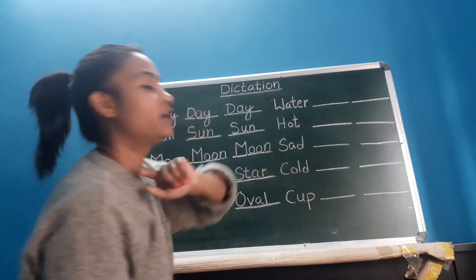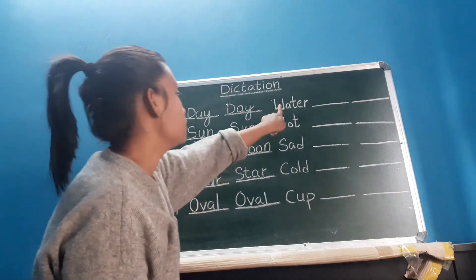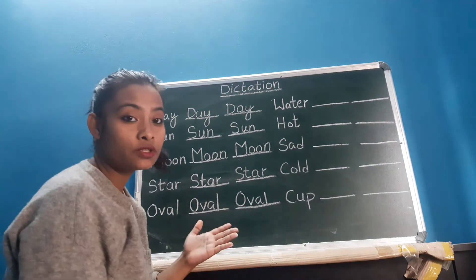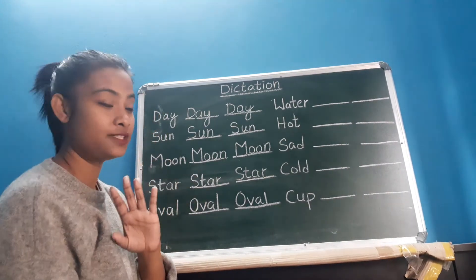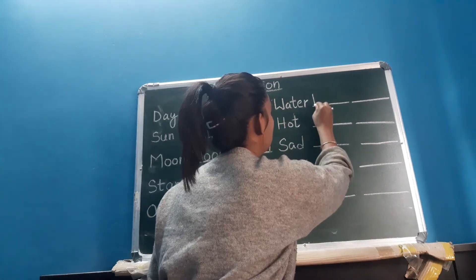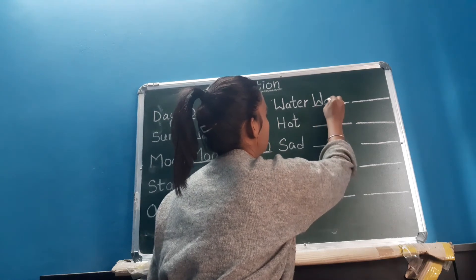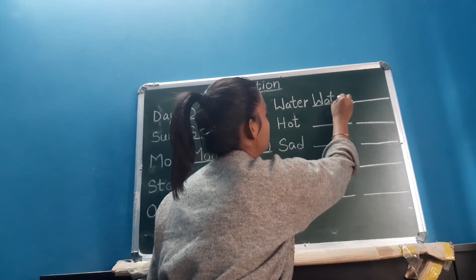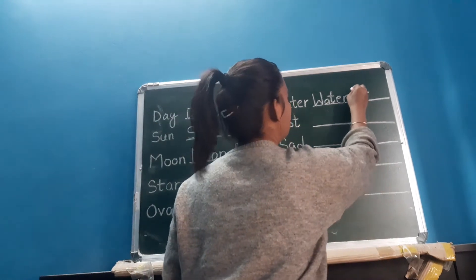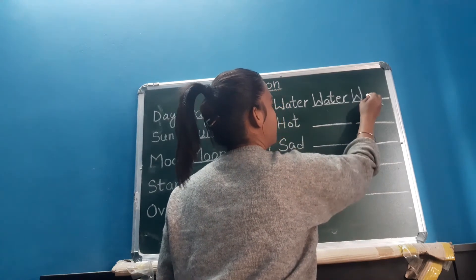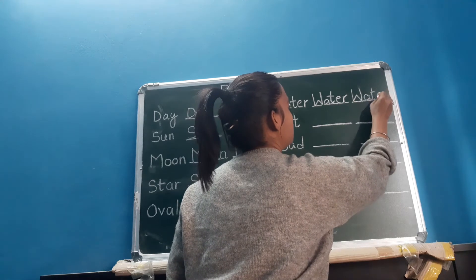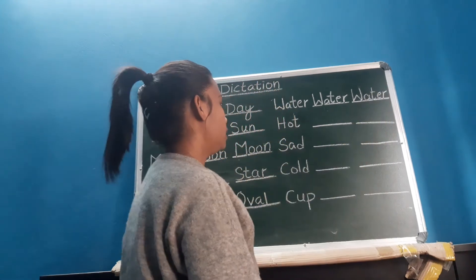Next: W, A, T, E, R — water. Again, W, A, T, E, R — water. So what is water? Whenever you feel thirsty, you drink water, isn't it? That is water. This is the spelling of water: W, A, T, E, R — water. Again, W, A, T, E, R — water. Okay, now next.